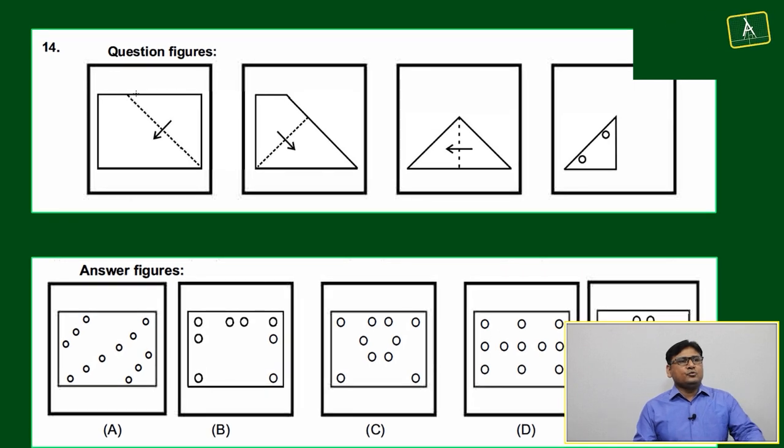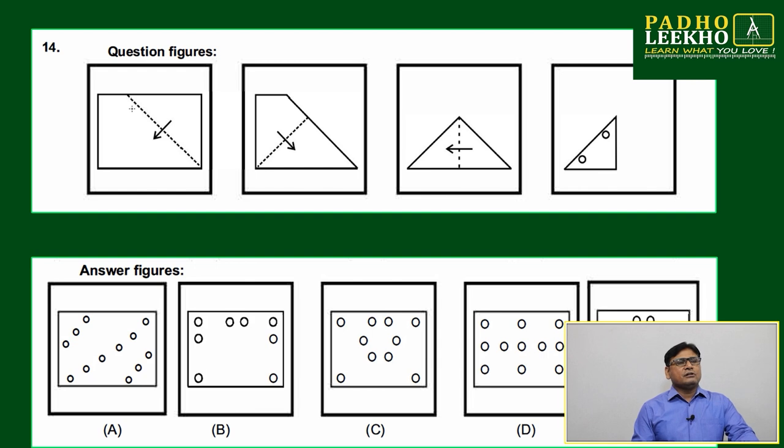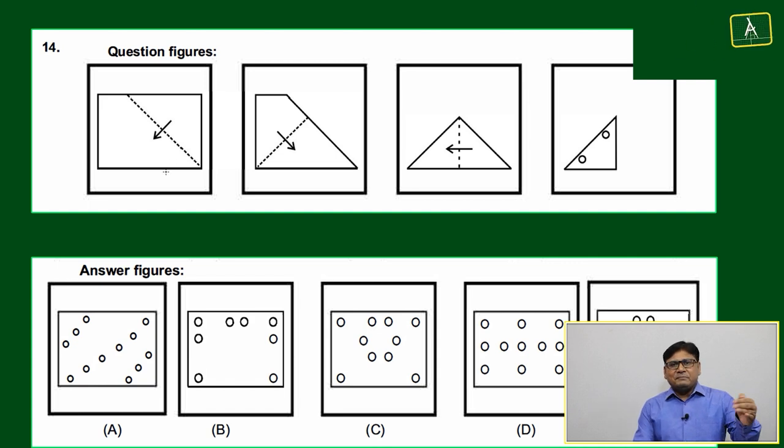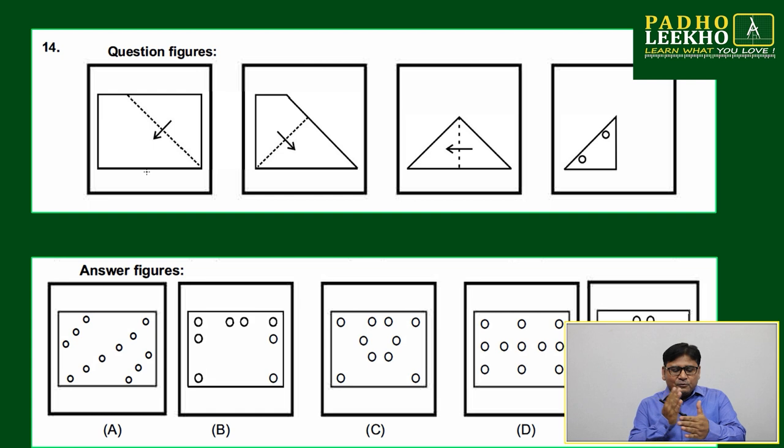Question 14, this is above moderate level because the cutting is not perfectly symmetrical, or the folding is not perfectly symmetrical. Whatever we have seen in the previous two or three questions related to paper folding, the folding was always happening with symmetry.